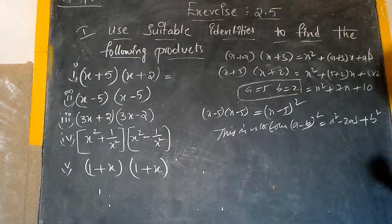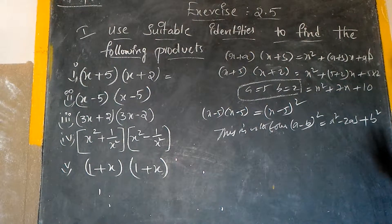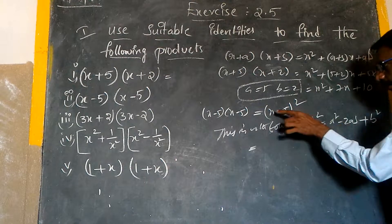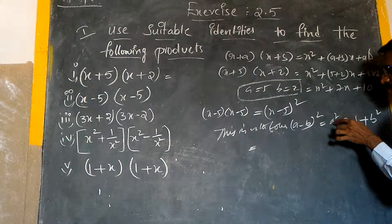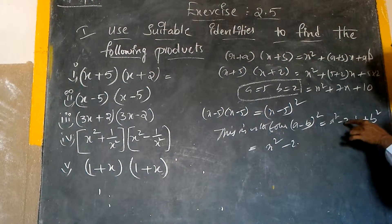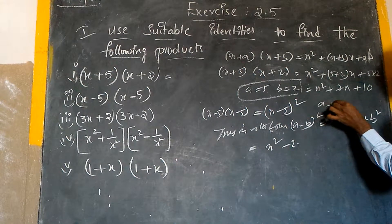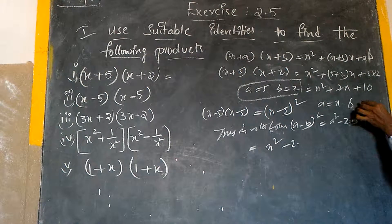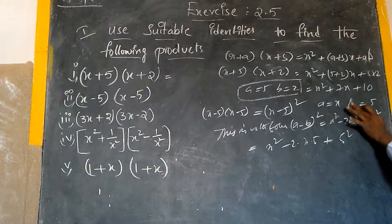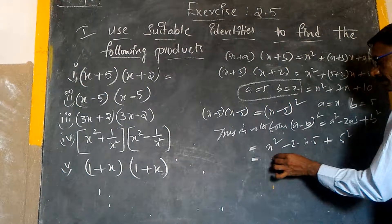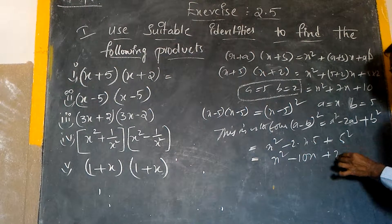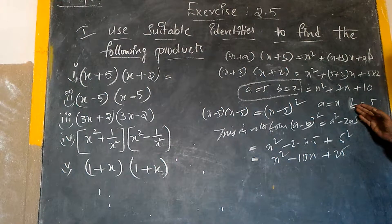By this formula we can write: my a value is x and my b value is 5 — not minus 5, keep that in mind. Therefore, in place of a we write x: x² minus 2 into x into 5, plus 5². So this is nothing but x² − 10x + 25. Do you understand? Yes, sir.